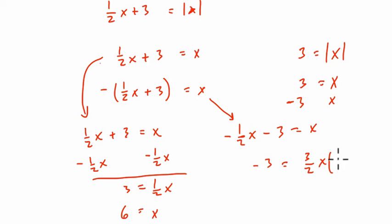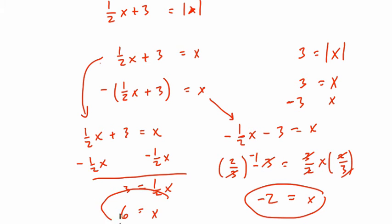I multiply both sides by 2 thirds. What do I get? Well, here, these 2's cancel out. These 3's cancel out, and x equals, this is negative 1. Negative 1 times 2 is negative 2, which is our answer here. And this is the other answer, 6.